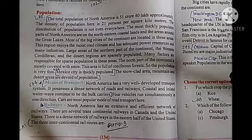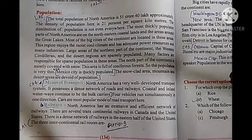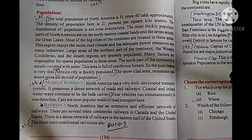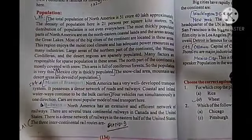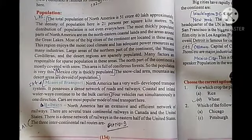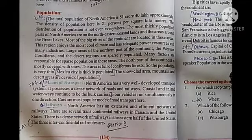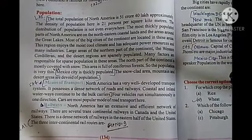North America has a very well developed transport system. It possesses a dense network of roads and railways. Coastal and inland waterways continue to be the bulk carriers. Railways, airways, and waterways are the most important means of transport in North America. North America has an extensive and efficient network of railways.